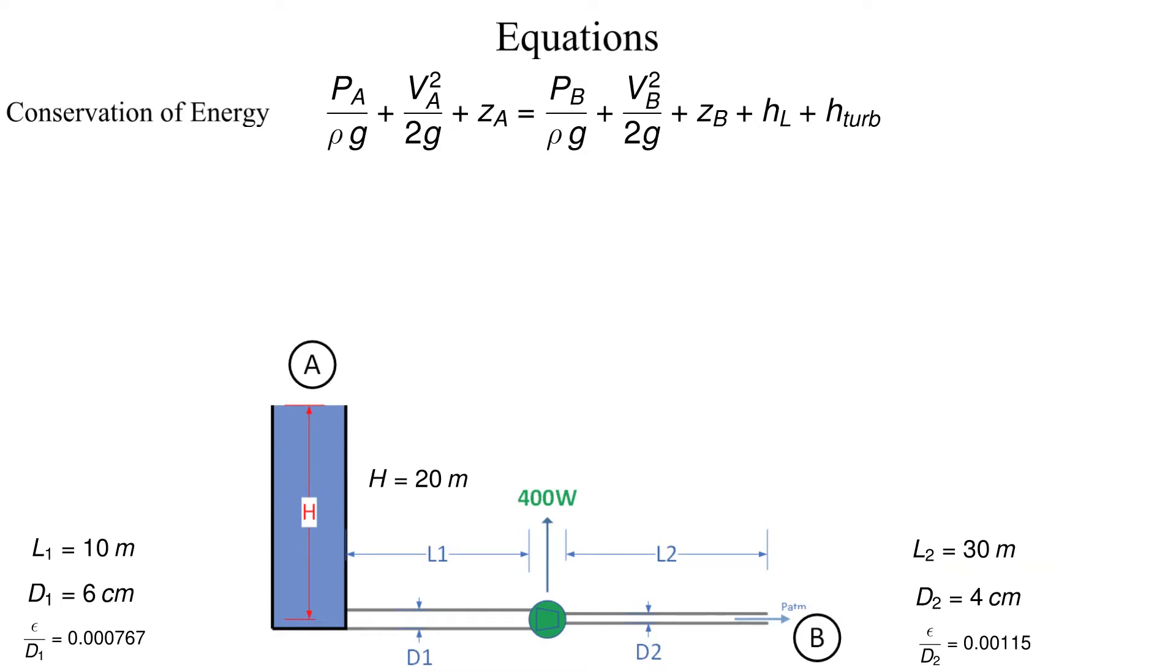We will also be using Darcy Weissbach's equation to calculate head loss. Finally, we also need an equation that relates the power of the turbine to the turbine head and volumetric flow rate. Note that we are using dimensions of energy per weight so all heads will be in length which in this example will be meters.